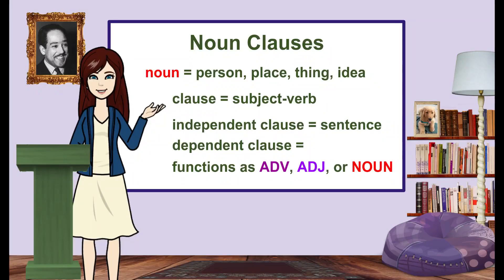As you recall, a noun can be a person, place, thing, or idea. A clause is a subject-verb combination, and an independent clause can stand alone as a sentence. However, a dependent clause functions as an adverb, adjective, or a noun in the sentence and cannot stand alone.